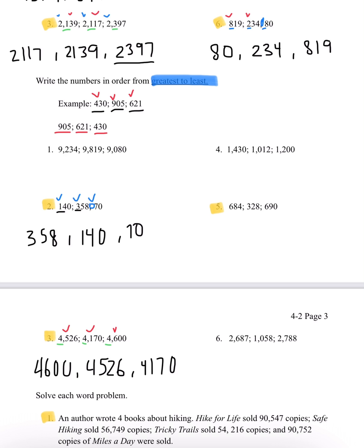Lastly, number 5 — we have 684, 328, and 690. Looking at the 100th place, we have a 6, a 3, and a 6. The 3 is the least, so 328 goes in the back as the least number. Now we look at the 10s place for the two 6s — we have an 8 and a 9. Since 9 is greater than 8, 690 is our greatest number, and 684 goes in the middle. That's our answer.